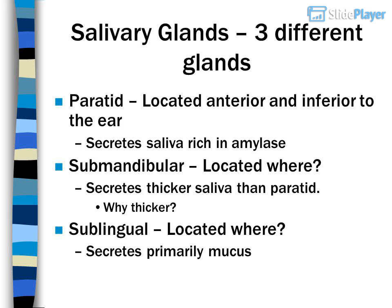There are three different salivary glands. The parotid gland is located anterior and inferior to the ear and secretes saliva rich in amylase. The submandibular gland — located where? It secretes thicker saliva than the parotid. Why thicker? The sublingual gland — located where?